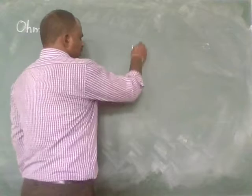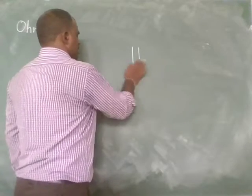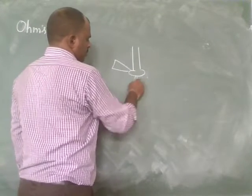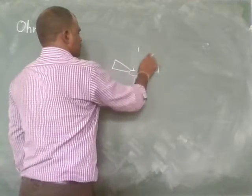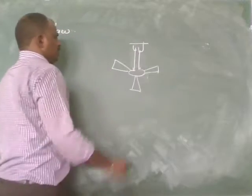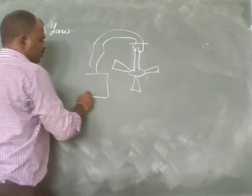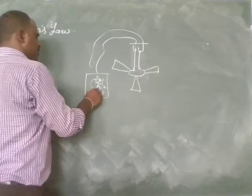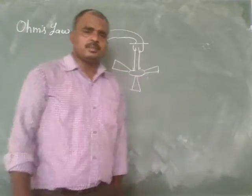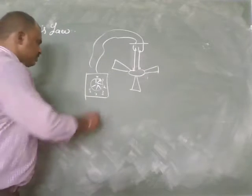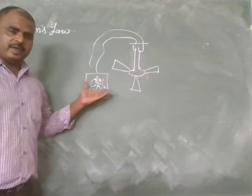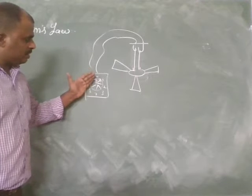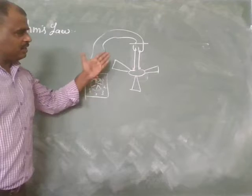Suppose there is one fan. Assume you have a fan, and this is our regulator. The regulator has numbers: 0, 1, 2, 3, 4, 5. When the regulator is at zero, the fan will be off. When we move the point of the regulator from 1, 2, 3, 4, 5 — what happens to the speed of the fan?